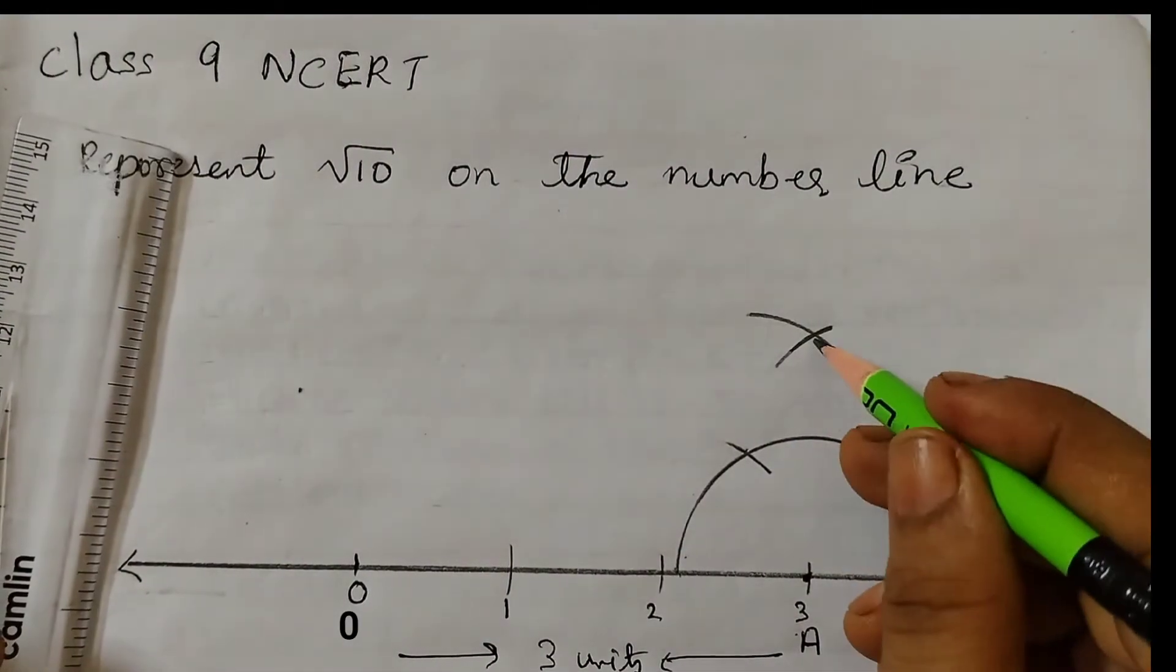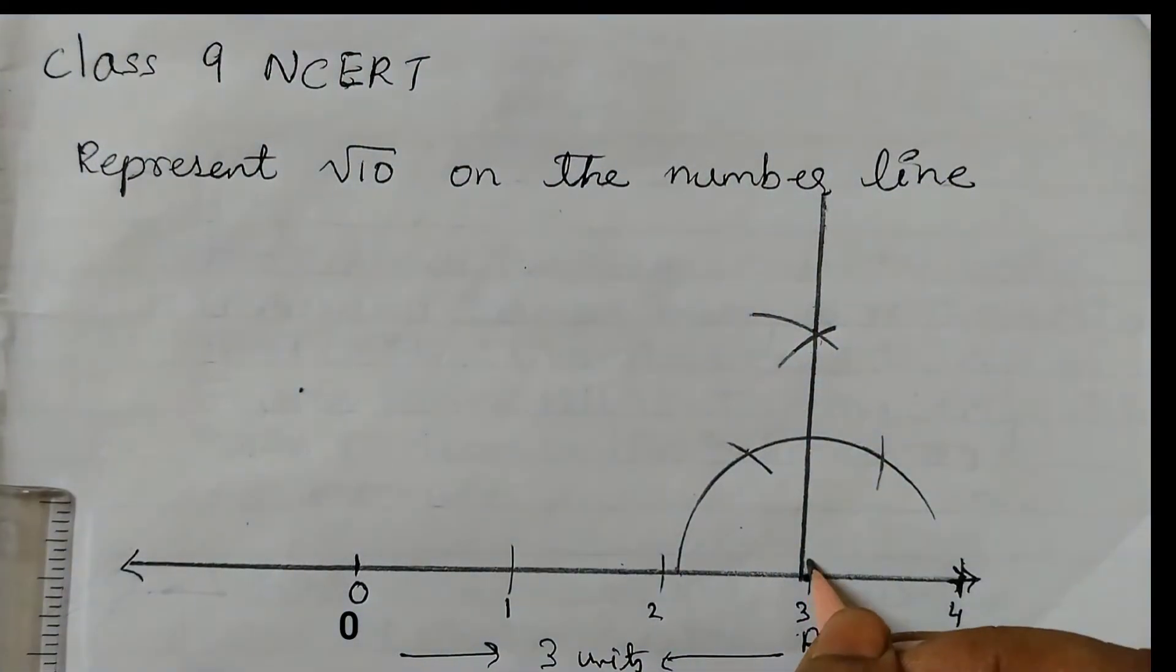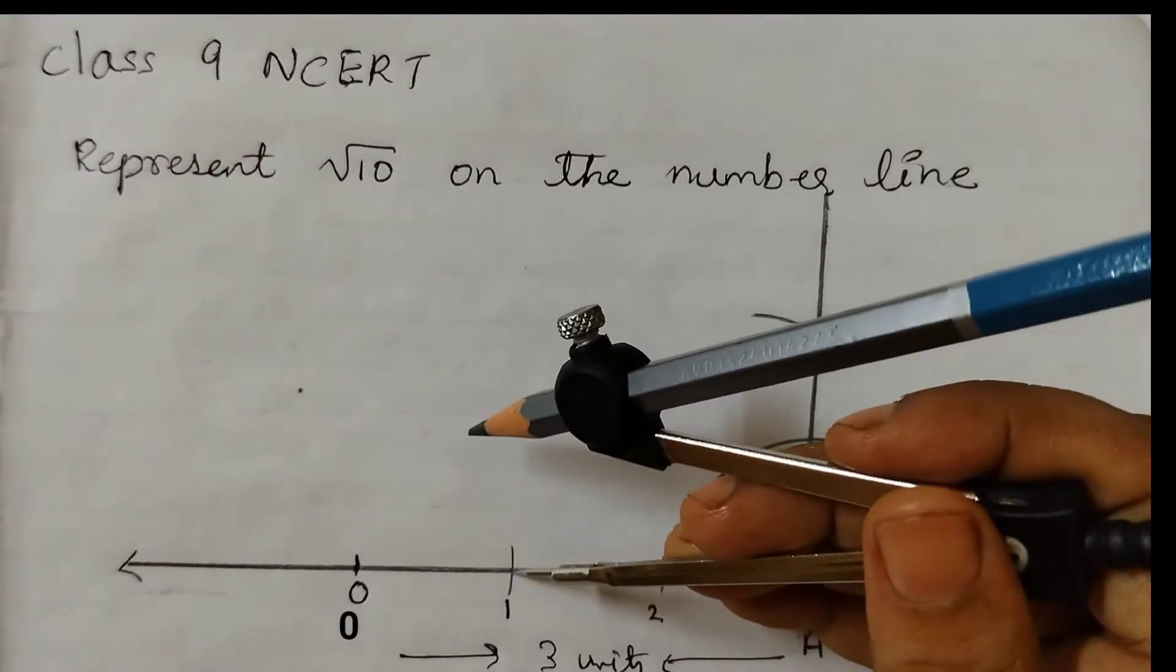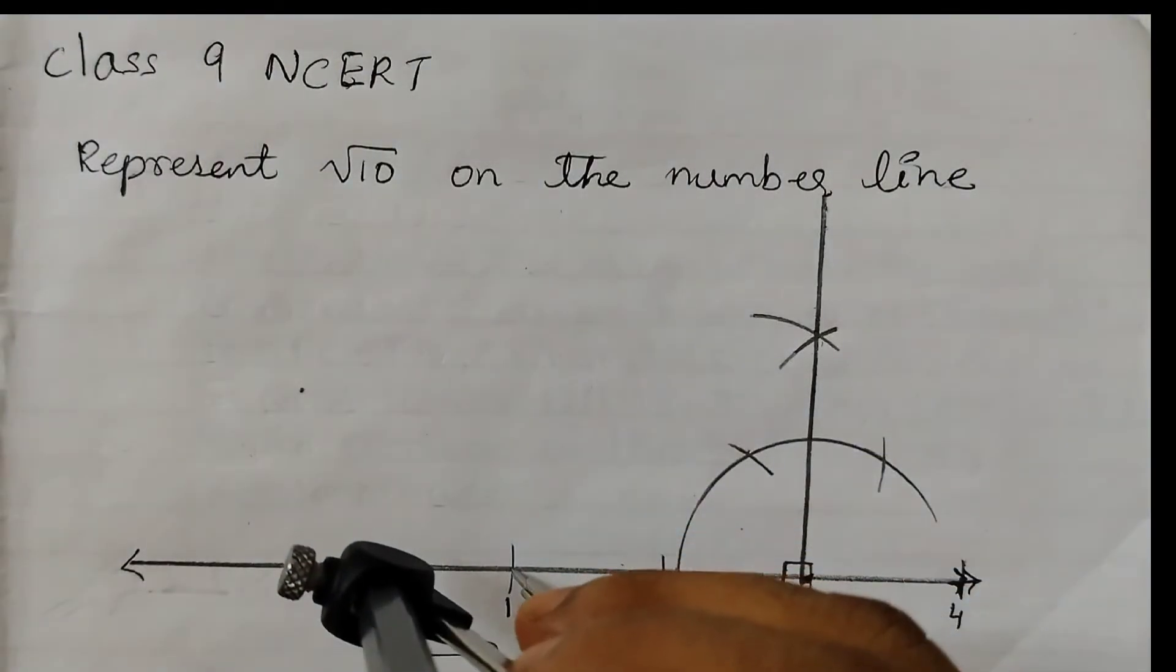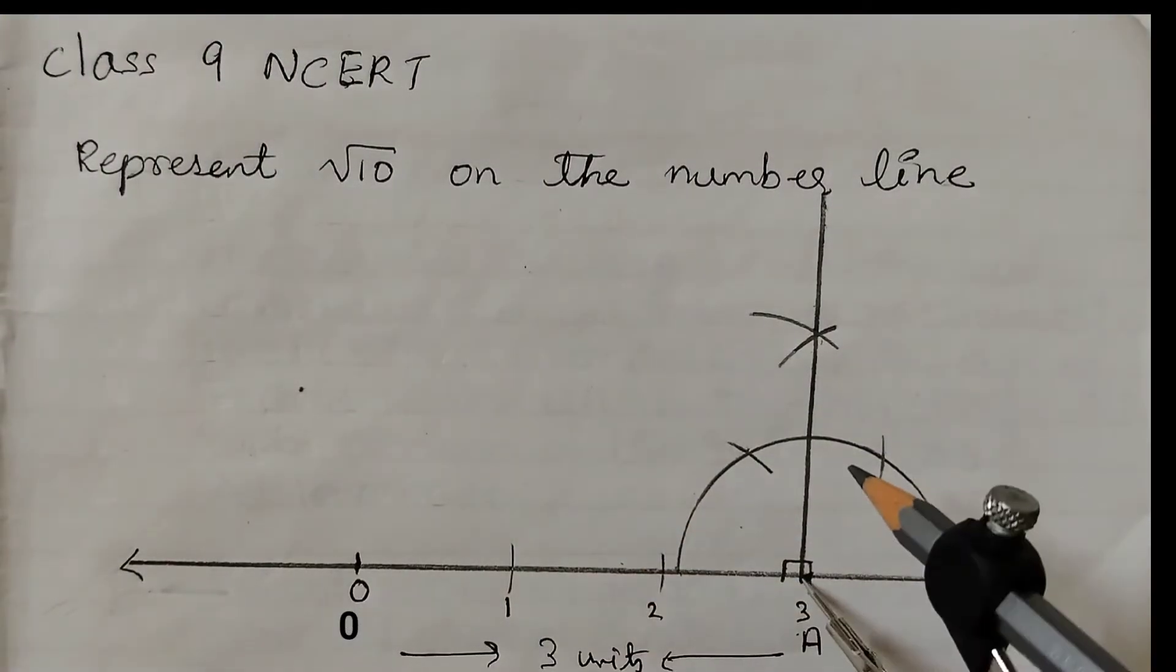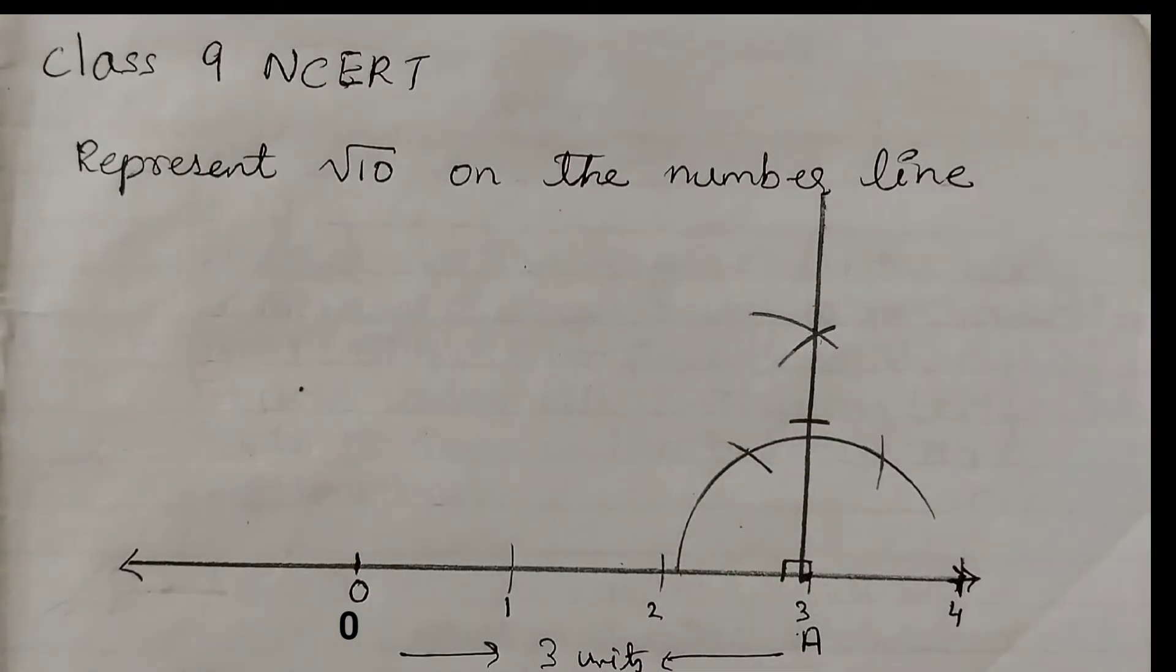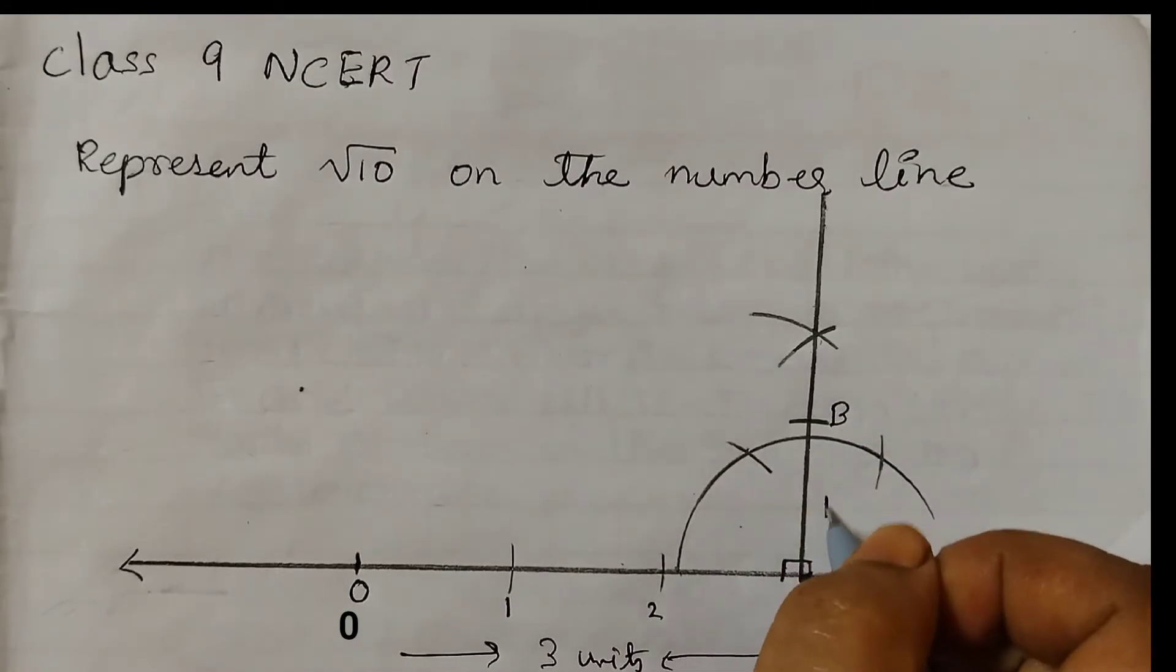Take one unit measurement, cut an arc from A such that this is 1 unit. Label this as point B, so this is 1 unit. Join OB. Now this length here is square root of 10.